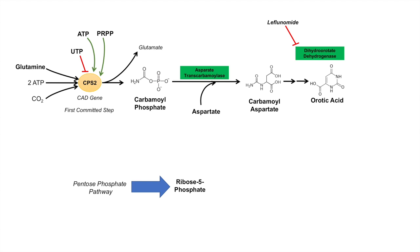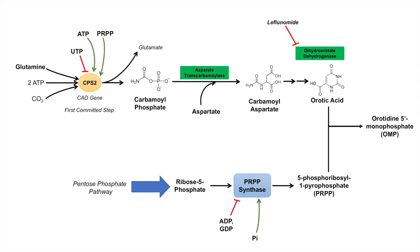Once we've got orotic acid, the cell needs something else. It actually needs PRPP, and it does that through the pentose phosphate pathway. It produces ribose 5-phosphate, and through the enzyme PRPP synthase, it produces 5-phosphoribosyl-1-pyrophosphate, or PRPP. The PRPP synthase is actually inhibited by ADP and GDP and is activated by inorganic phosphate. When you have PRPP and orotic acid, they actually combine to form orotidine 5-prime monophosphate, or OMP. So OMP is the product of the two, orotic acid and PRPP, being combined together.